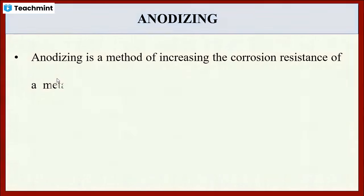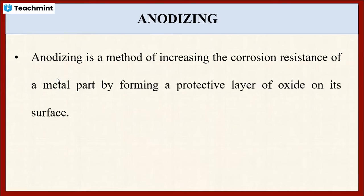Anodizing is one of the corrosion control methods that increases the corrosion resistance of a metal. It does this by forming a protective layer of oxide on the surface of the metal, which increases corrosion resistance and reduces corrosion. This process is called the anodizing process.